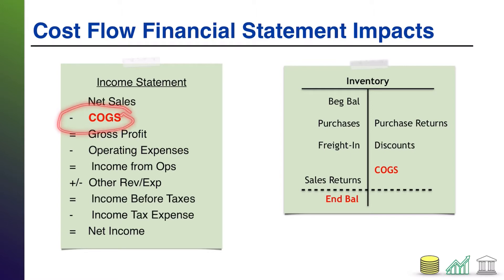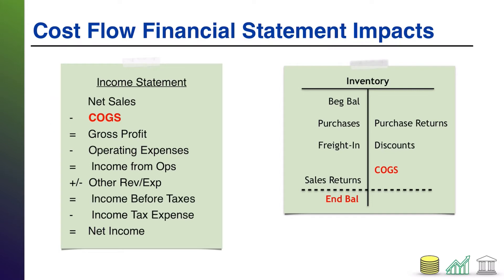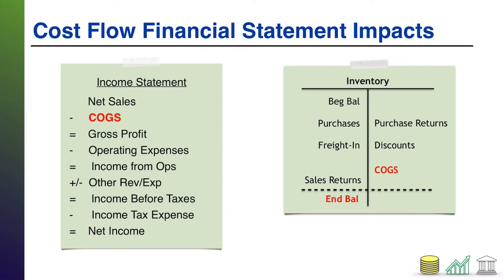Cost of goods sold appears on a company's income statement. When we deal specifically with a multi-step income statement — which is generally required once you get into the business of selling merchandise and calculating things like gross profit — cost of goods sold is high up on the income statement in the sales section as a subtraction from net sales. This means anything below it on the income statement is going to be impacted by that number.